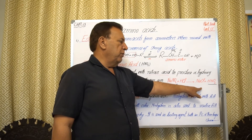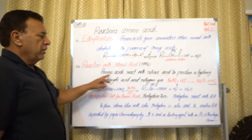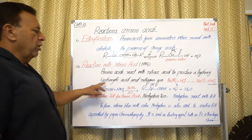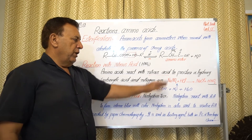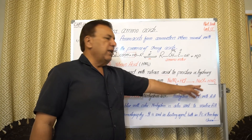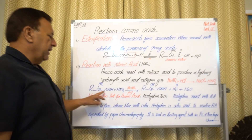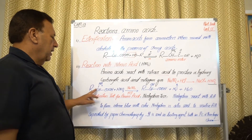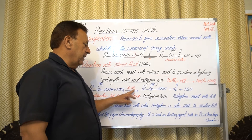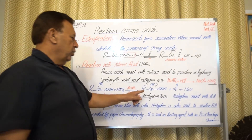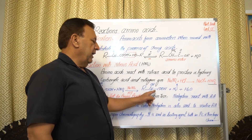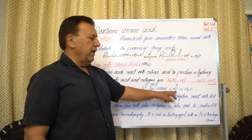Amino acids react with nitrous acid (HNO2) to produce alpha hydroxy carboxylic acid and nitrogen gas. Nitrous acid is produced by the reaction of sodium nitrite along with hydrochloric acid. The general formula: amino acid RCH(NH2)COOH reacts with nitrous acid — the NH2 group is converted into a hydroxy group, giving alpha hydroxy acid along with the formation of nitrogen gas.